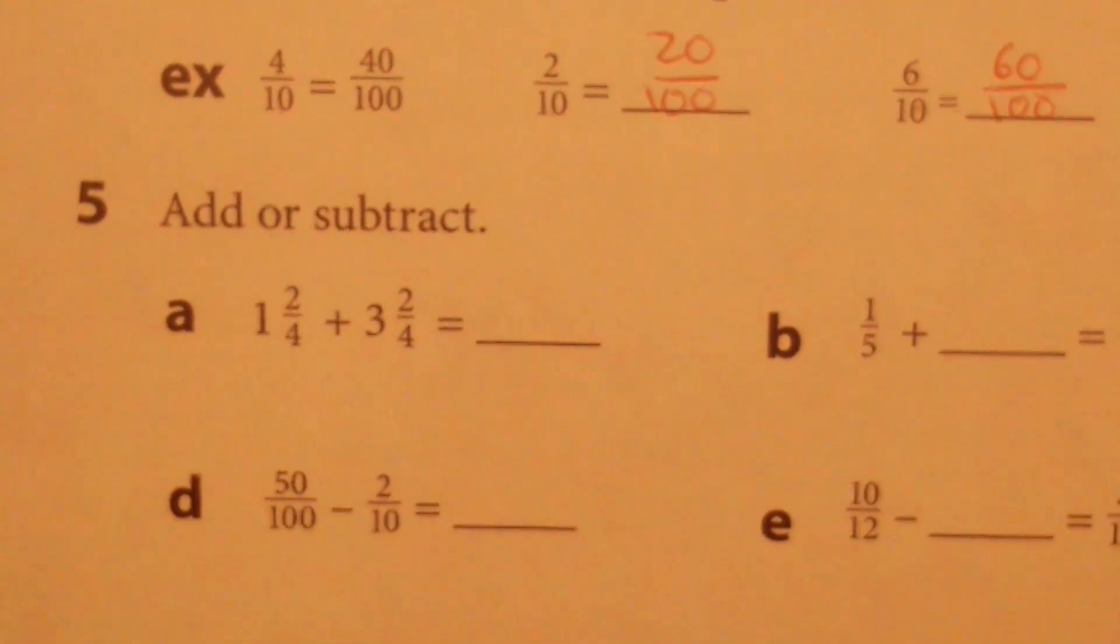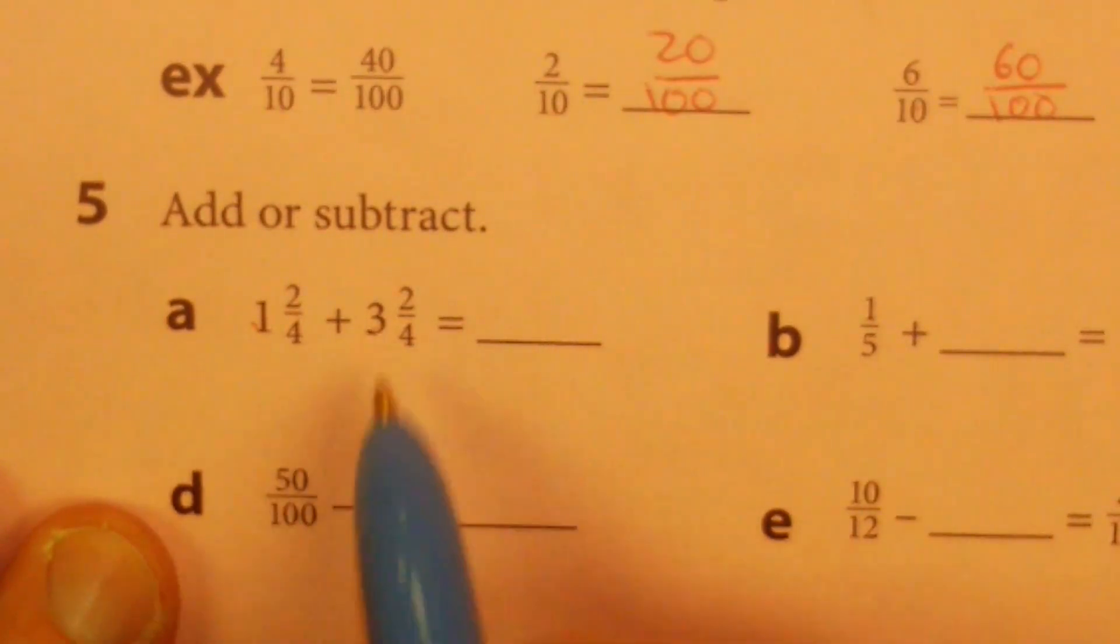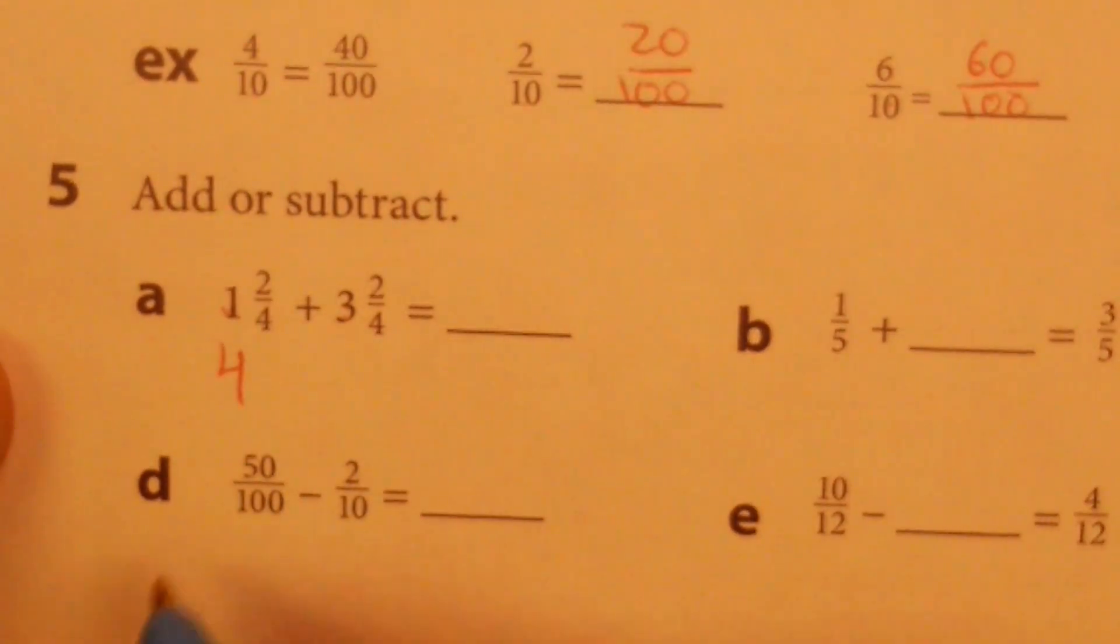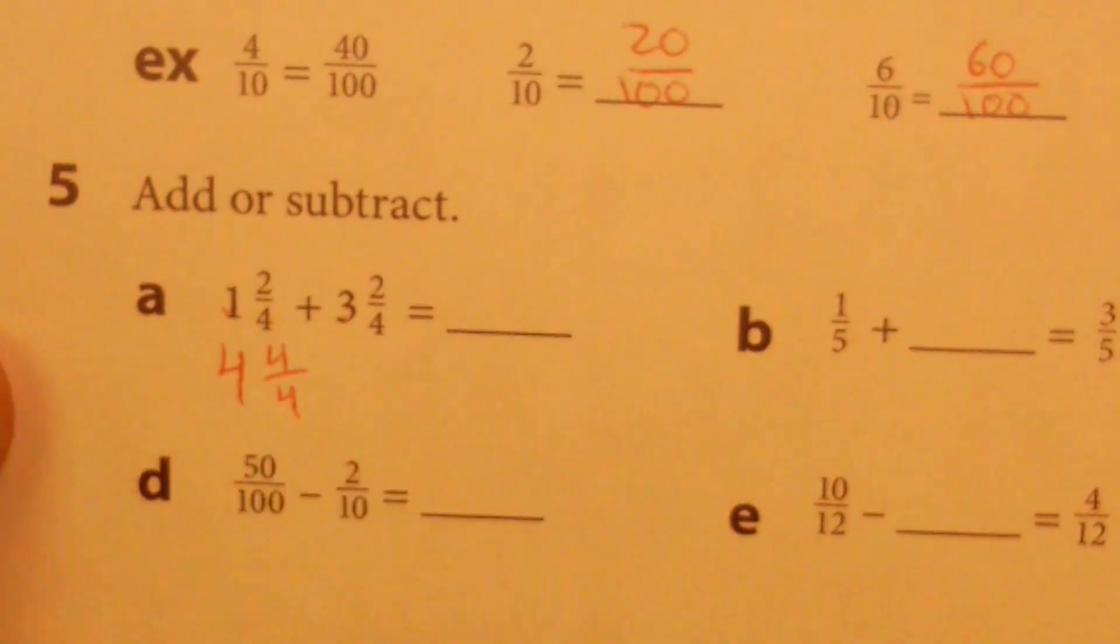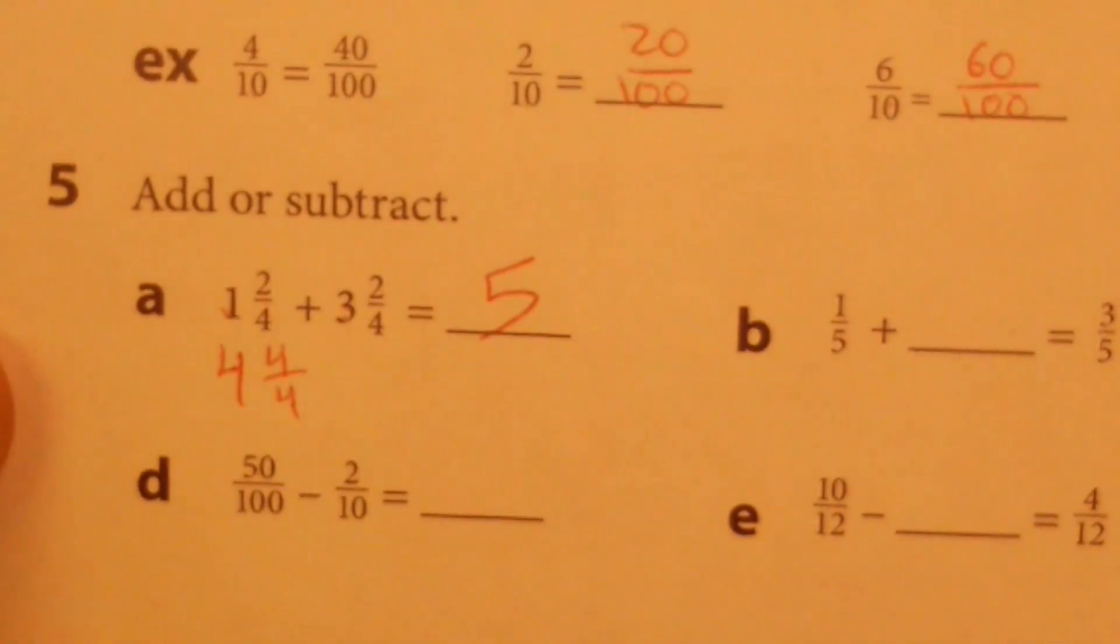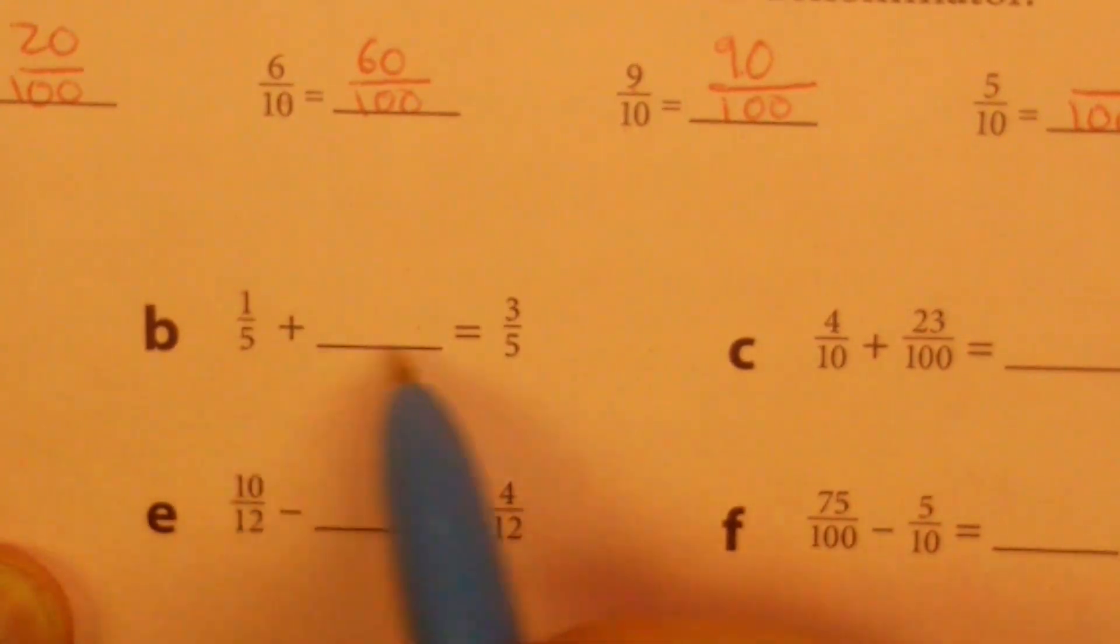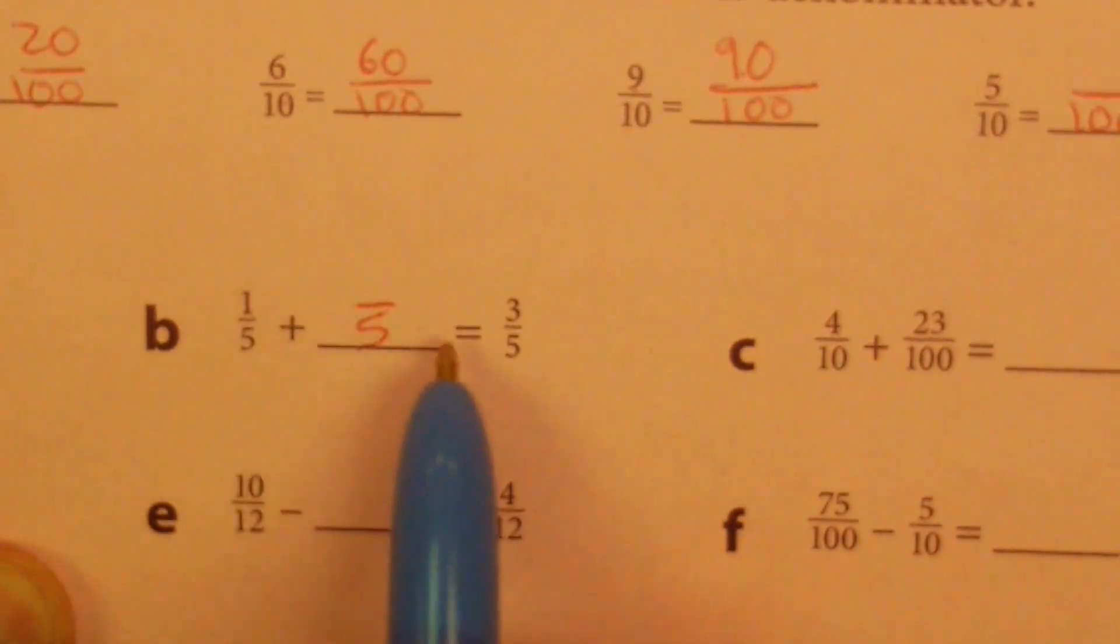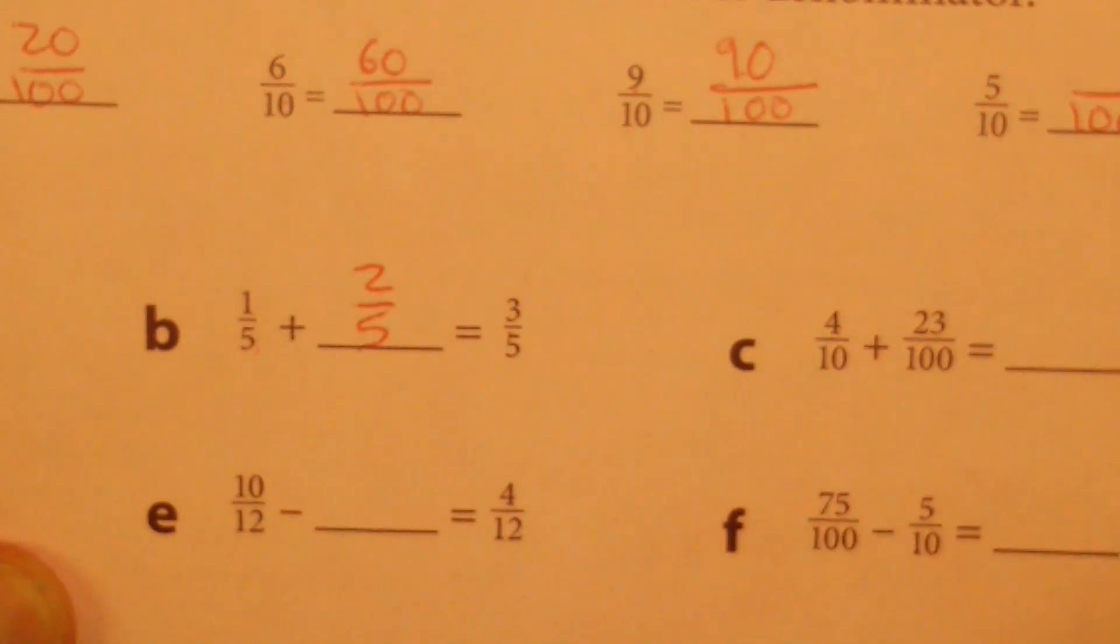We're going to do some addition or subtraction depending on what it says. I have two-fourths, two-fourths, one and three. Let's write it out a little bit. If I combine the three plus one, I get four. If I do two-fourths plus two-fourths, I get four-fourths. Wait, four-fourths is the same as one. So I have four and one. What's four plus one? Five. Okay. As I look at letter B, one-fifth plus something equals three-fifths. So I'm going to need something over five. One plus what equals five? Hopefully, one-fifth plus two-fifths equals three-fifths.